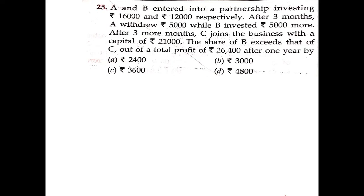A and B enter into a partnership by investing $16,000 and $12,000 respectively. After three months, A withdraws $5,000 while B invests $5,000 more. After three more months, C joins the business with a capital of $21,000. Find the share of B's excess over C out of a total profit of $26,400 after one year.